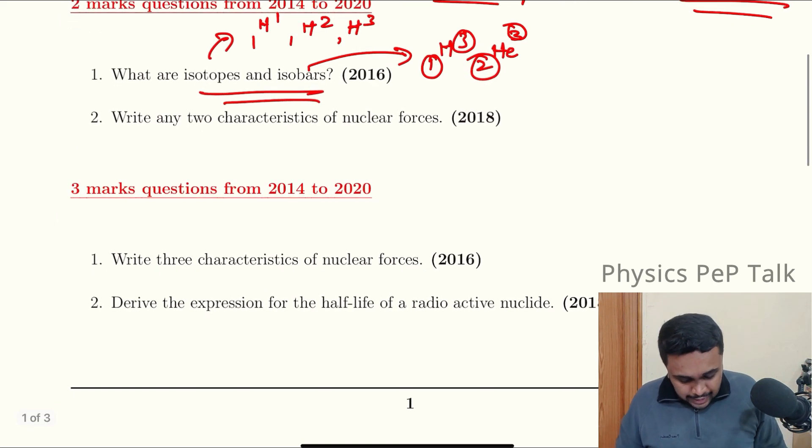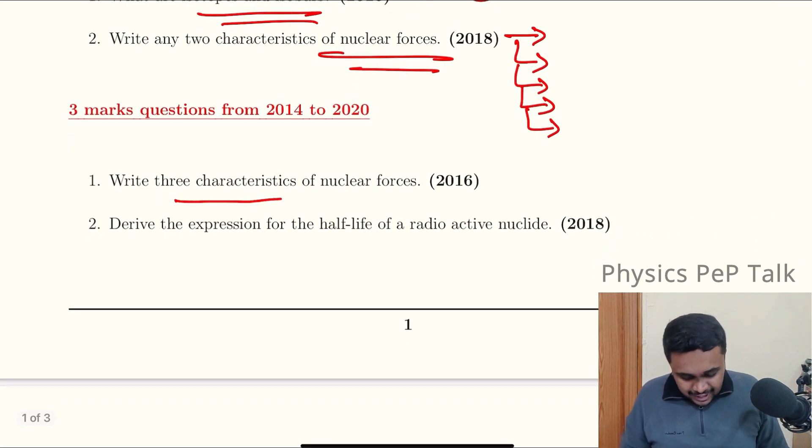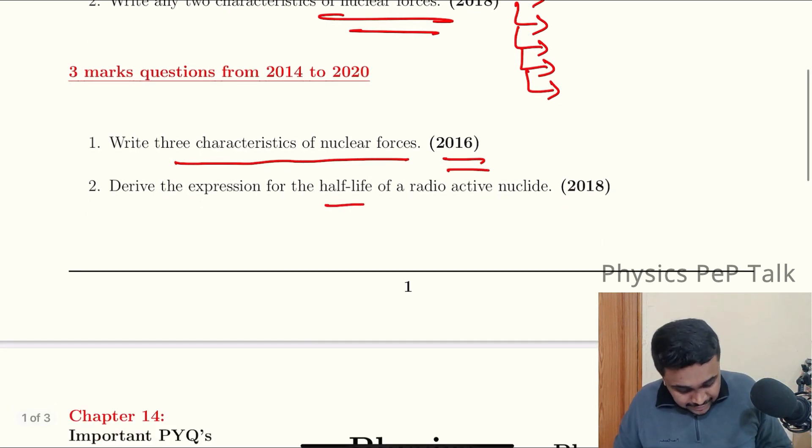Write any two characteristics of nuclear forces. This is two marks. Nuclear force is the strongest force. They are short range forces. They are non-central. They are charge independent. They are spin dependent. Five properties are there, write any two and you will get two marks.